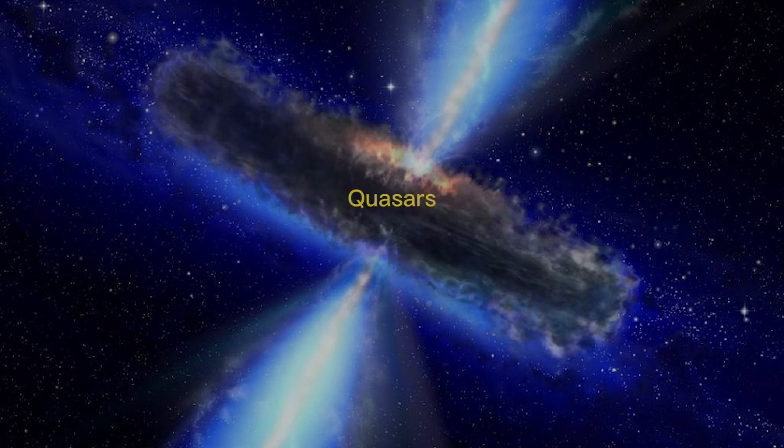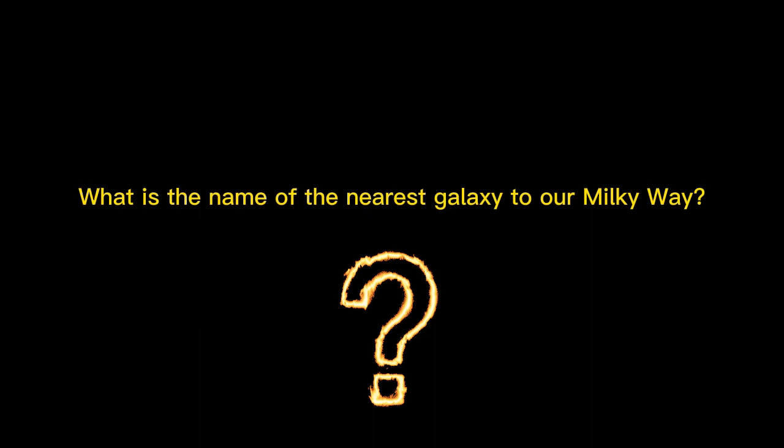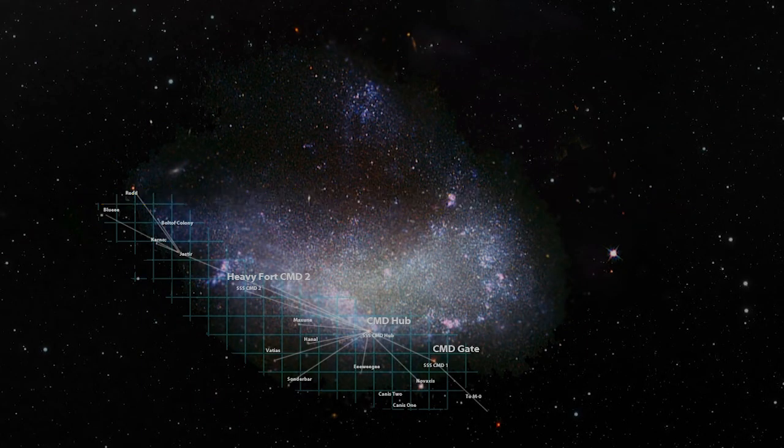Quasars. What is the name of the nearest galaxy to our Milky Way? Canis Major Dwarf Galaxy.